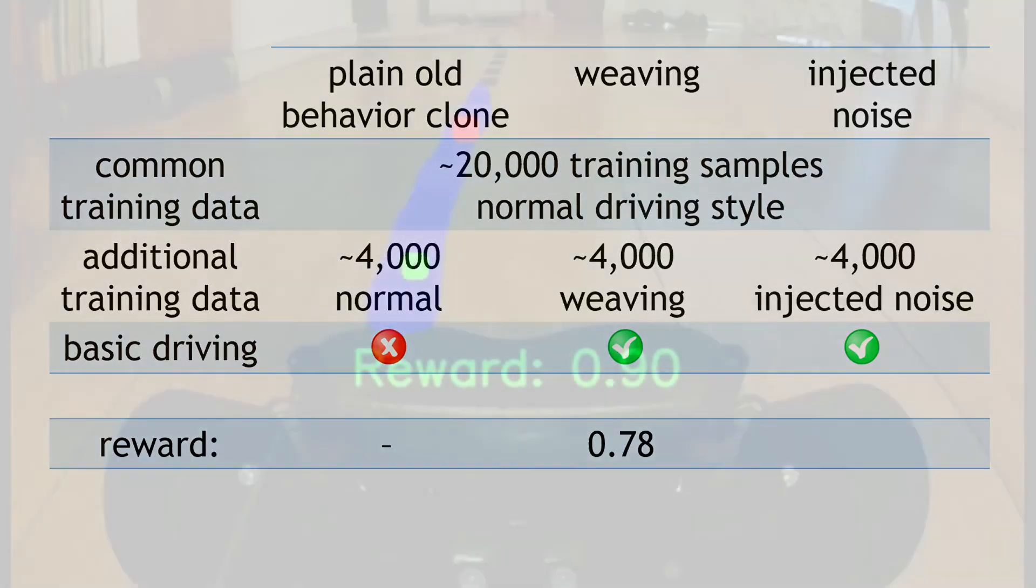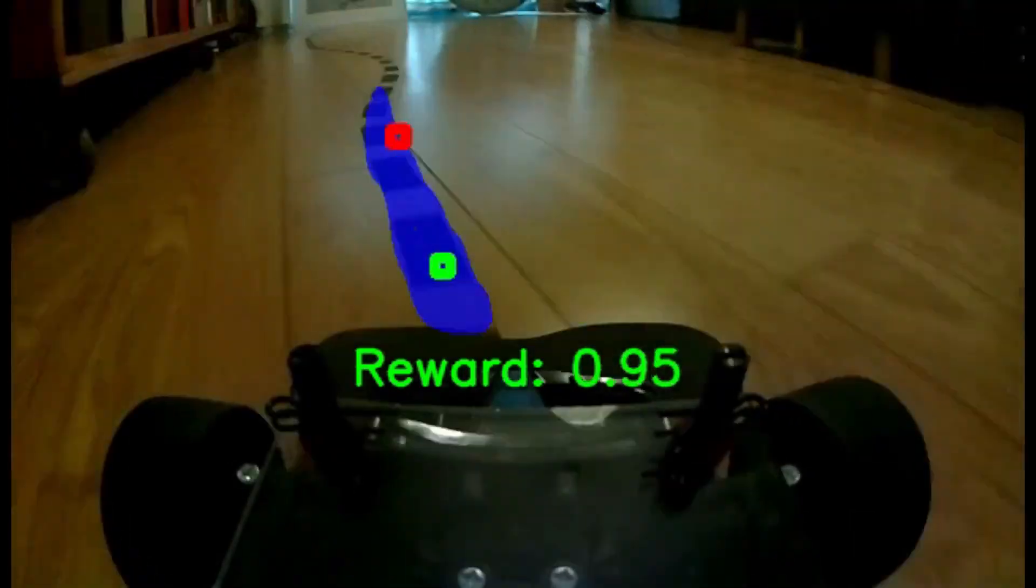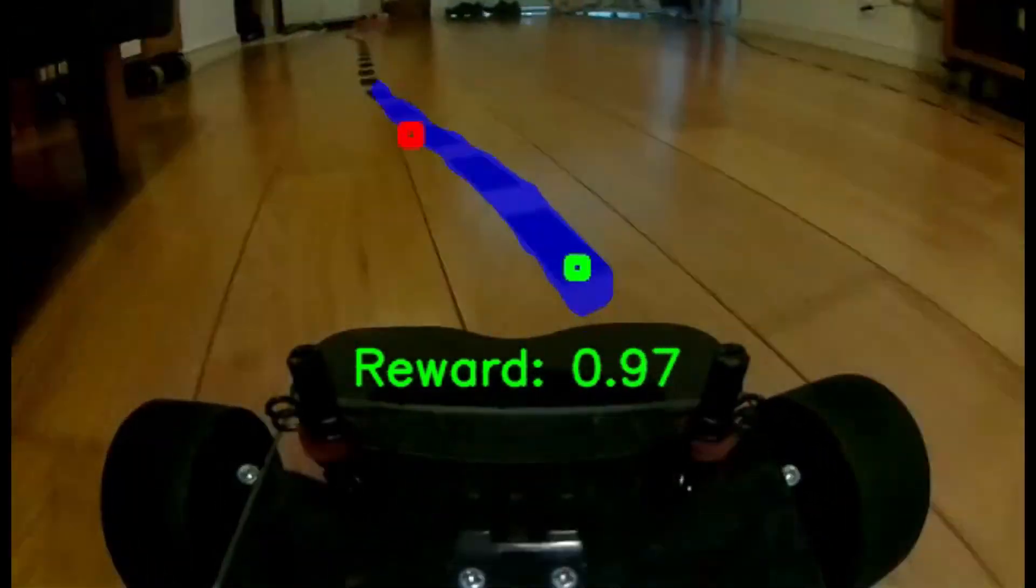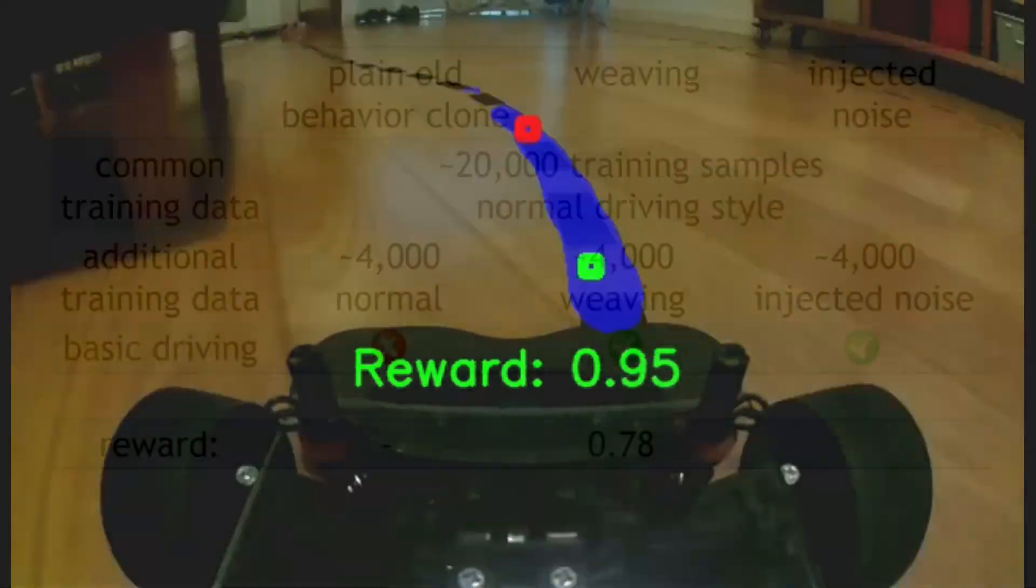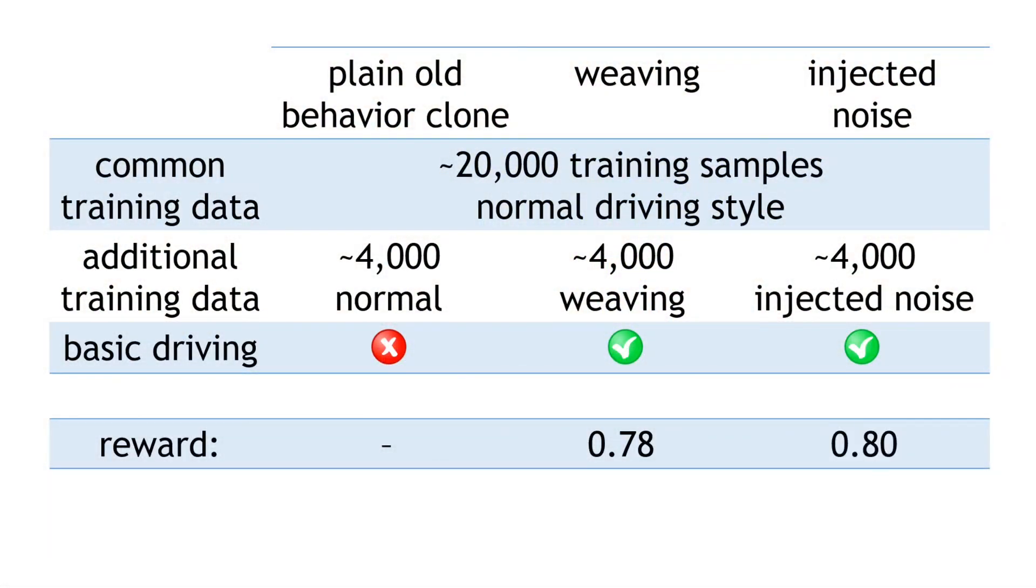And for the noise trained policy, again driving around five laps in either direction, this policy came in slightly better, with a 0.80 average per image.